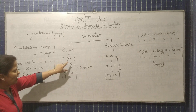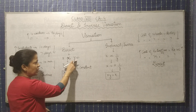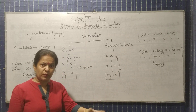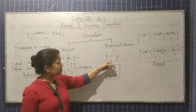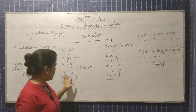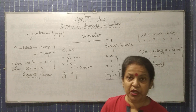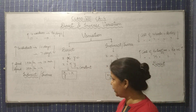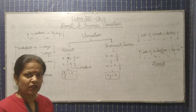I think this concept is now clear. In directly proportional, x upon y equals k. In inverse variation, x is proportional to one upon y, meaning x into y equals k. In both cases, you write k and find its value. The value of k depends upon the question and the situation — whether it is direct variation, where k equals x upon y, or inverse variation, where k equals x into y.